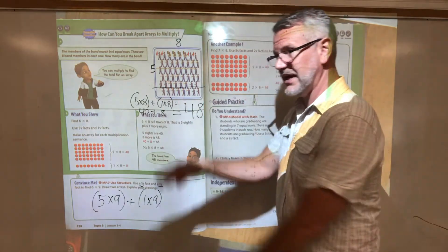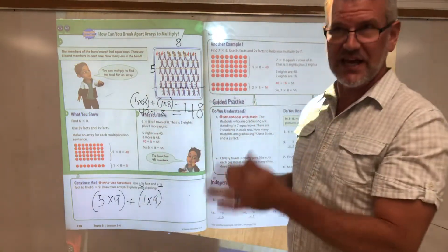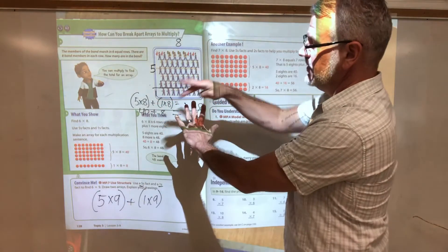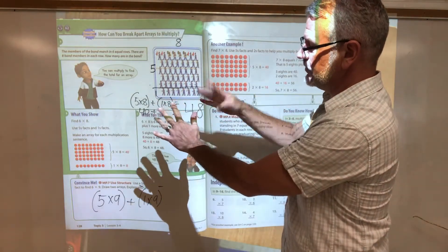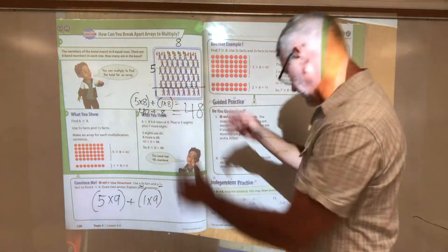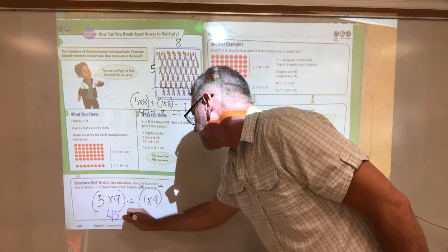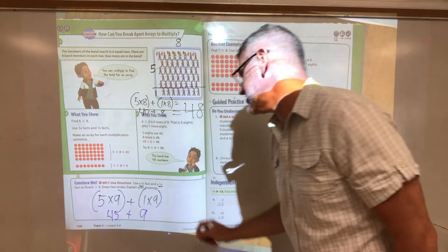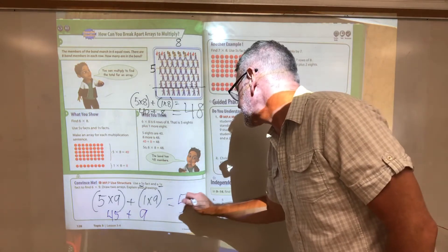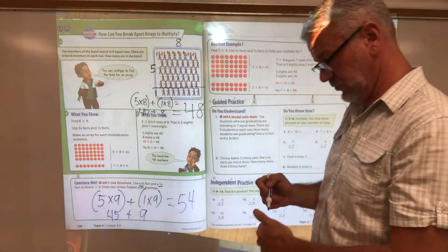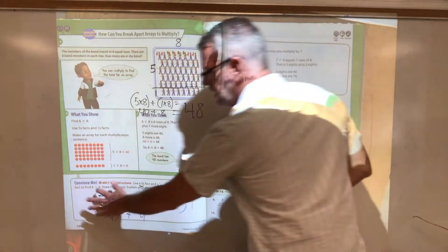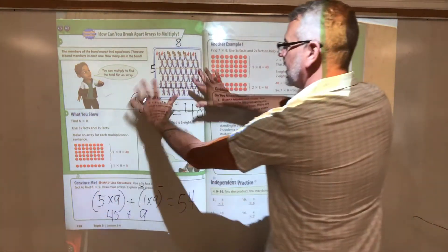Use commutative property and switch that to be nine groups of five: five, ten, fifteen, twenty, twenty-five, thirty, thirty-five, forty, forty-five. Plus one more nine, which is just nine, and that's going to give us fifty-four. We could have done the nines trick to figure that out.